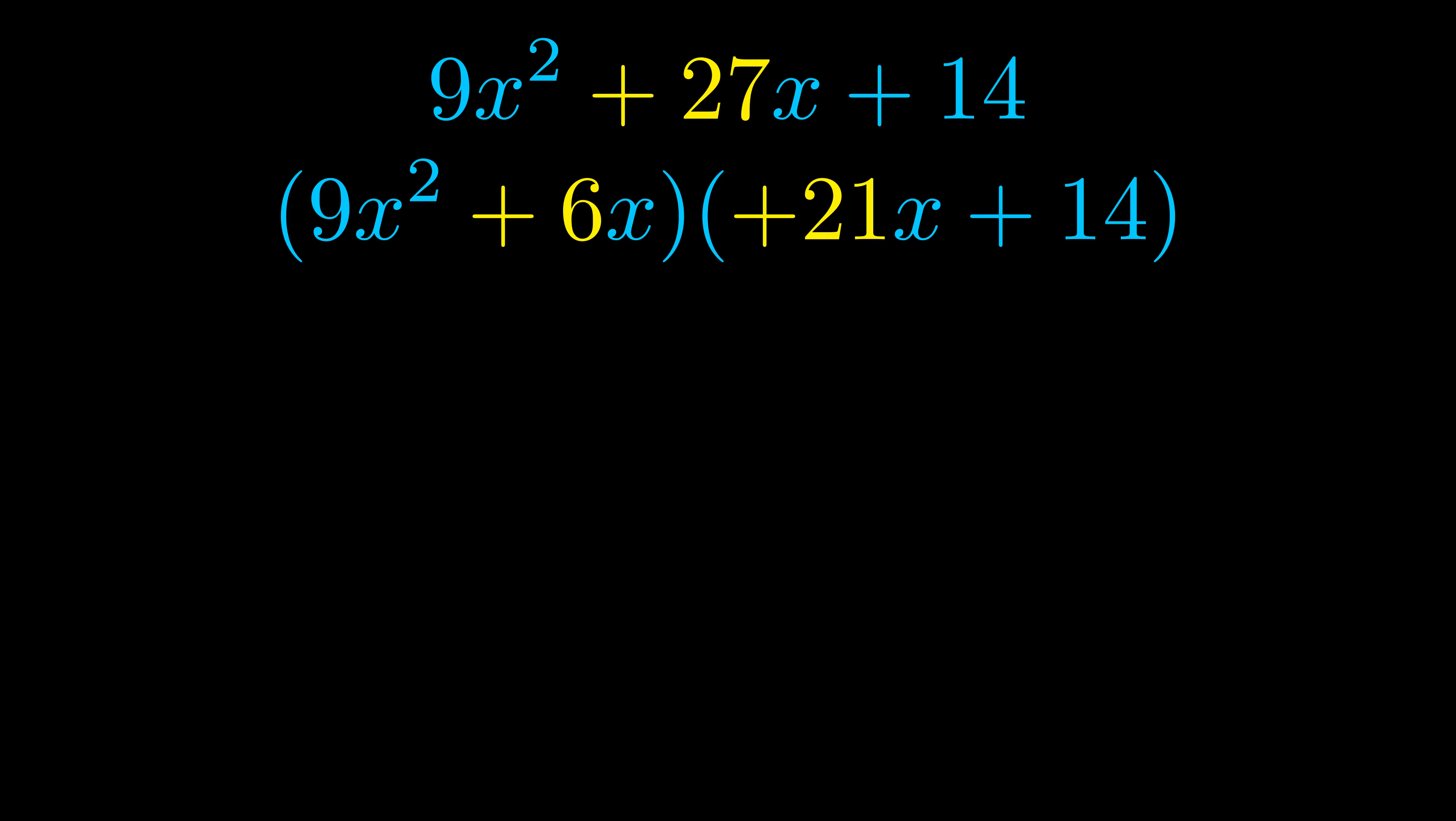Notice also how what remains inside of the parentheses is the same in both cases. The blue values are the same. Those blue values will become one of our factors and we will combine the two green values, the GCFs that we pulled out, to get the other one. And that is our fully factored equation.